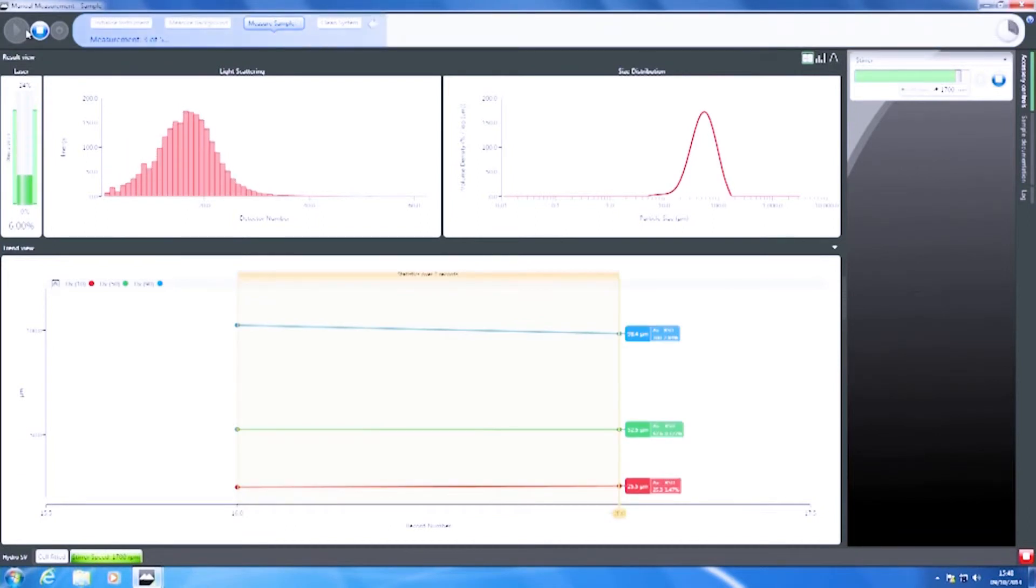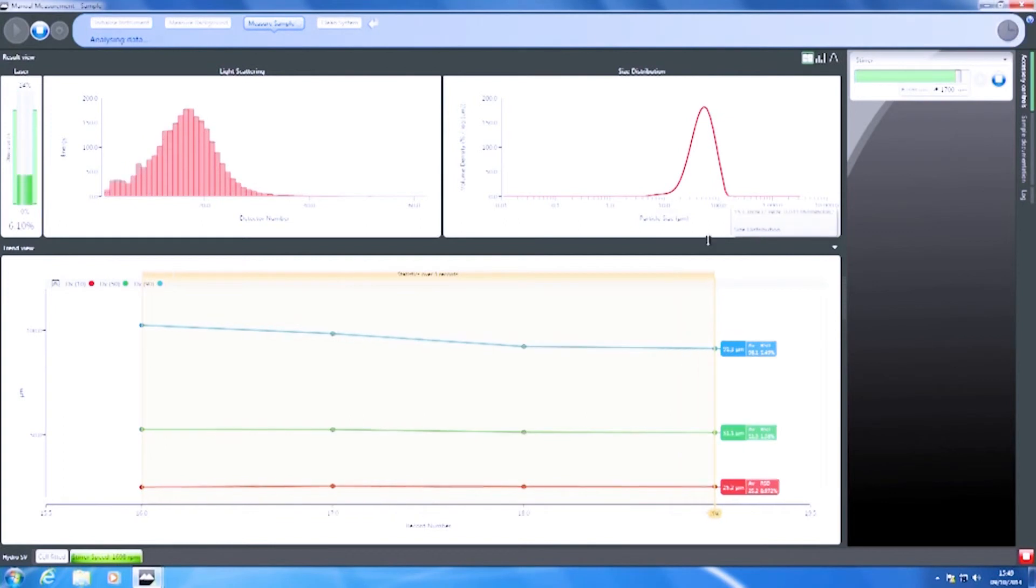What was the size of this sample, Anne? So, it's about 50 micron D50, the median particle size, but you can see on here we've got particles up to nearly 200 micron in size. And what we're looking at is the trend view to see that the particle size remains nice and stable.